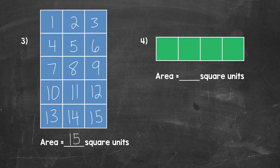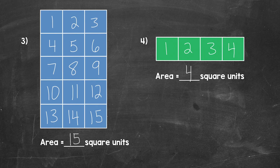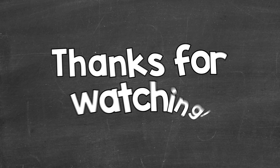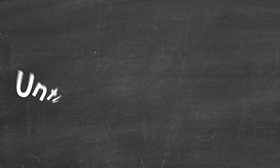Lastly, let's take a look at number four. How many unit squares did it take to cover that rectangle? One, two, three, four. So the area of this rectangle is four square units. So there you have it — there's an introduction to area. That should give us a basic understanding that we can build off of. I hope that helped. Thanks so much for watching. Until next time, peace.